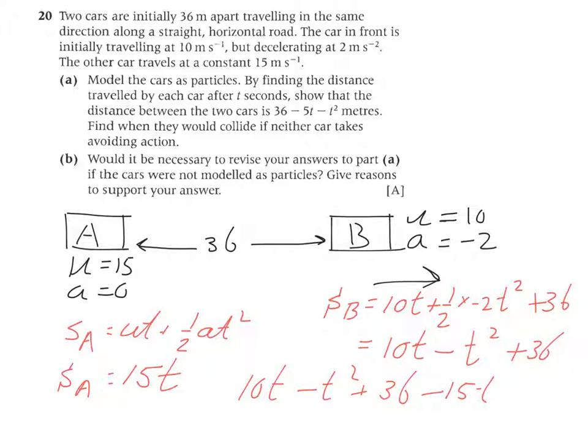And if you simplify that, you're going to get minus T squared minus 5T plus 36. So minus T squared, 10T minus 15T is minus 5T, plus 36. And indeed that's what they say - we have to show that the distance between the two cars is 36 minus 5T minus T squared meters.